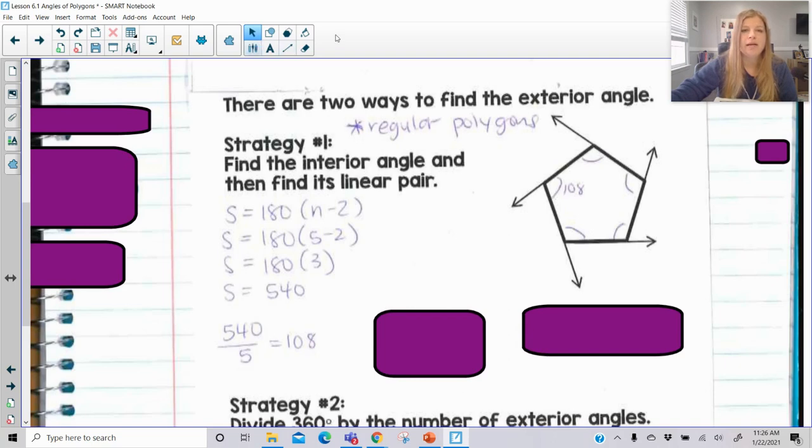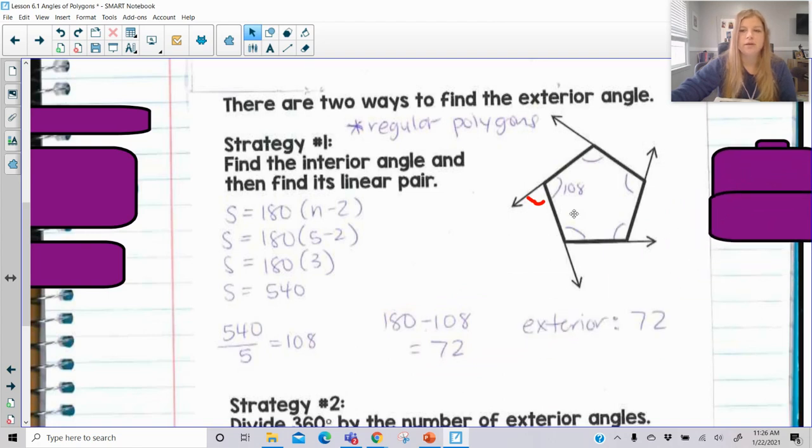Well, if this is 108, then I can go ahead and I can figure out the exterior because look, they make a linear pair. So I would say, okay, well, 180 minus that 108 is 72 and therefore my exterior angle is 72. And then notice if there's 72s, 72, then this is 72, 72, 72. Guess what 5 times 72 is? It's 360. So all of the exteriors will always add up to 360. It is pretty cool.